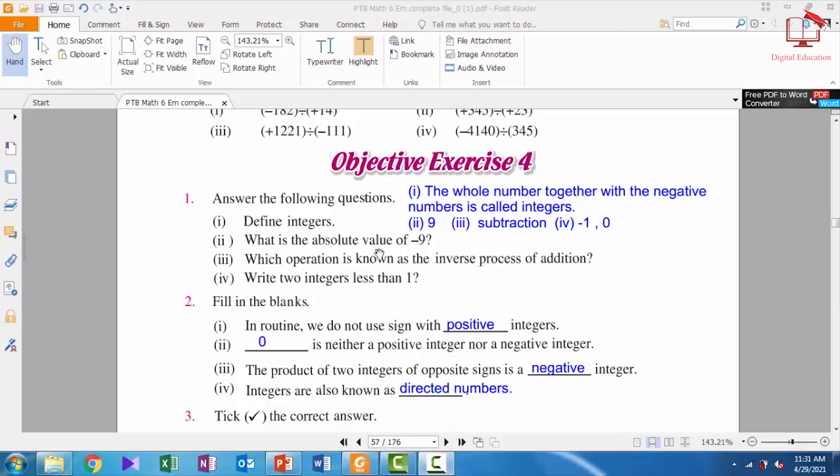What is the absolute value of -9? Simple, the absolute value of -9 is 9. Part 3: which operation is known as the inverse process of addition? Simple, the inverse process of addition is subtraction. Part 4: write 2 integers less than 1. The 2 integers less than 1 are 0 and -1.